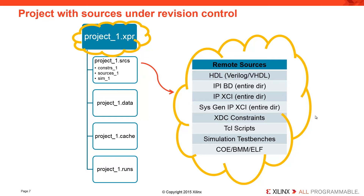However, we would not check in our .sources directory, our data, cache, and runs directory. These are derived objects. They include temporary files that Vovato is using but are not required to be managed in order to rebuild or recreate your entire project. Not only would it be inefficient to check these files into a revision control system, it can also cause additional trouble. We strongly encourage you not to check these files into a revision control system.